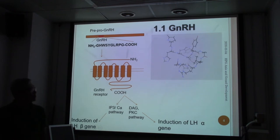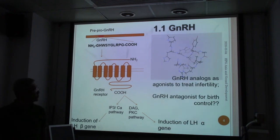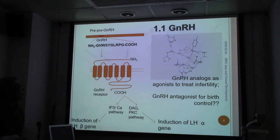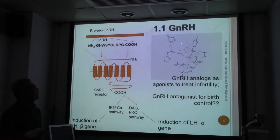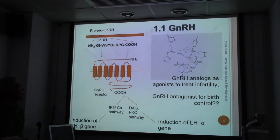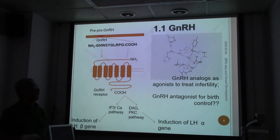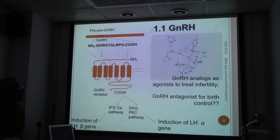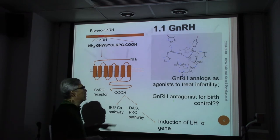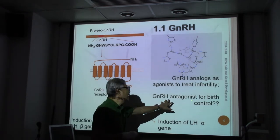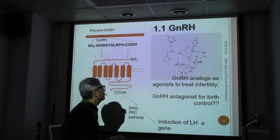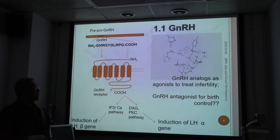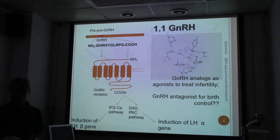Scientists have developed different GnRH analogs used as agonists to treat infertility. In some cases, GnRH analogs designed as antagonists may be used for birth control.